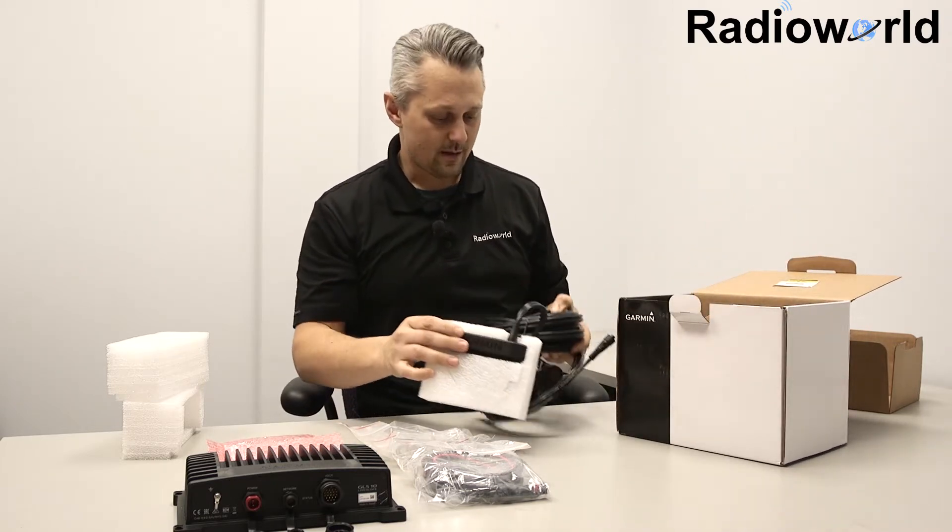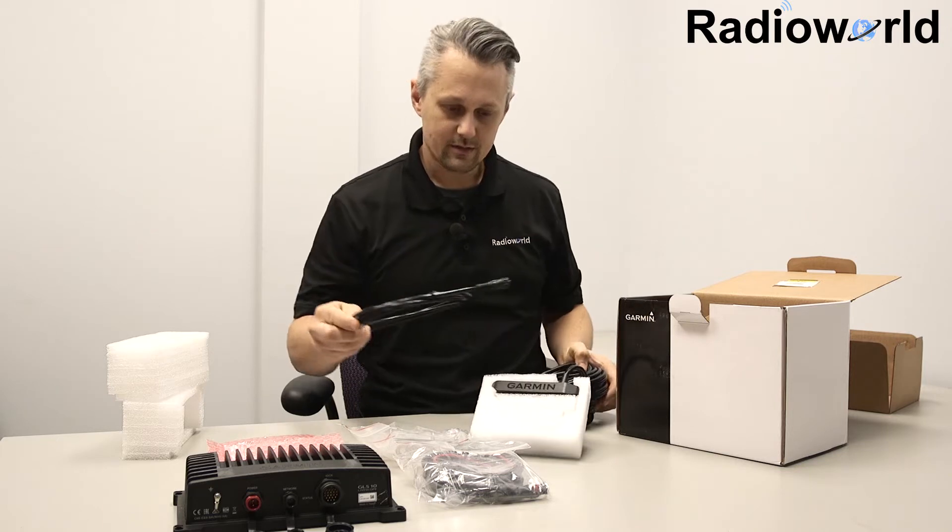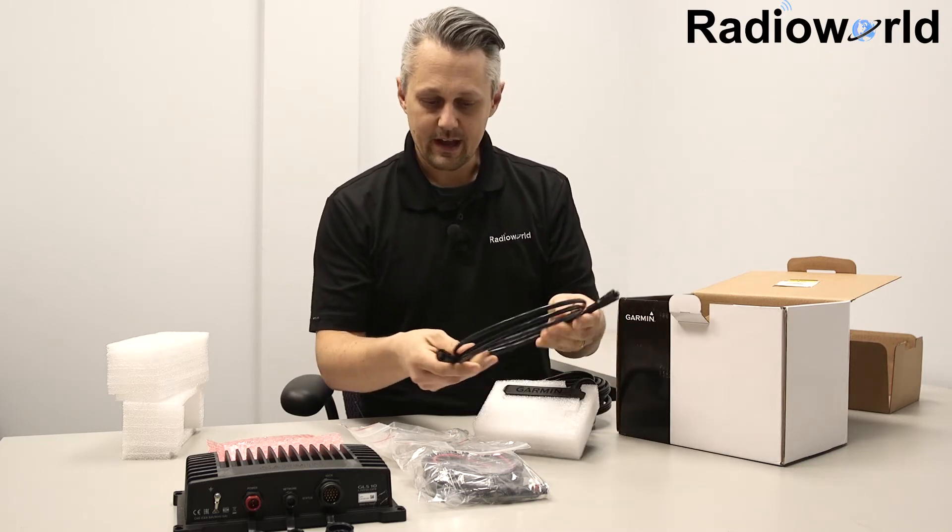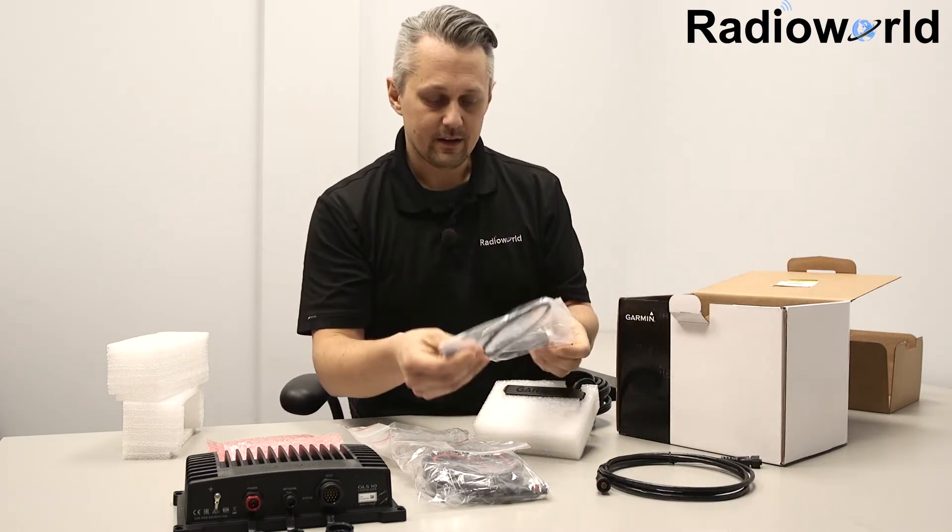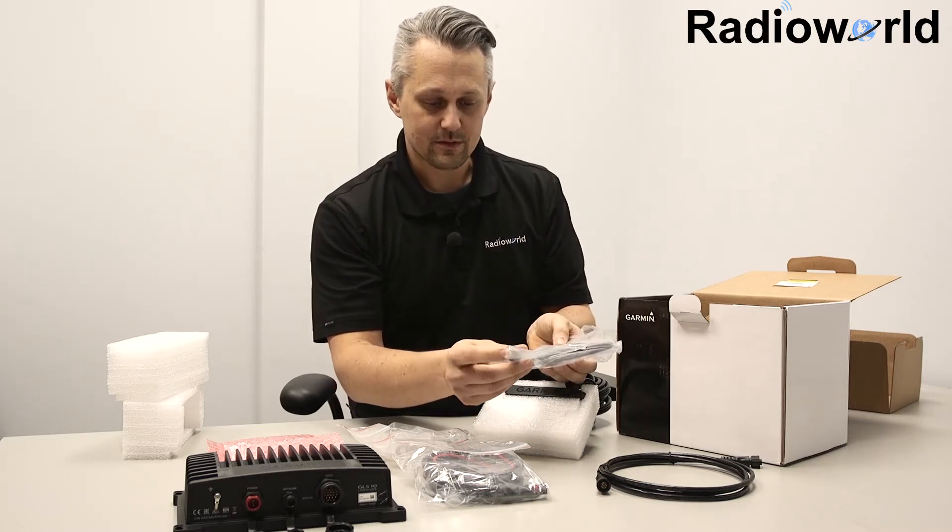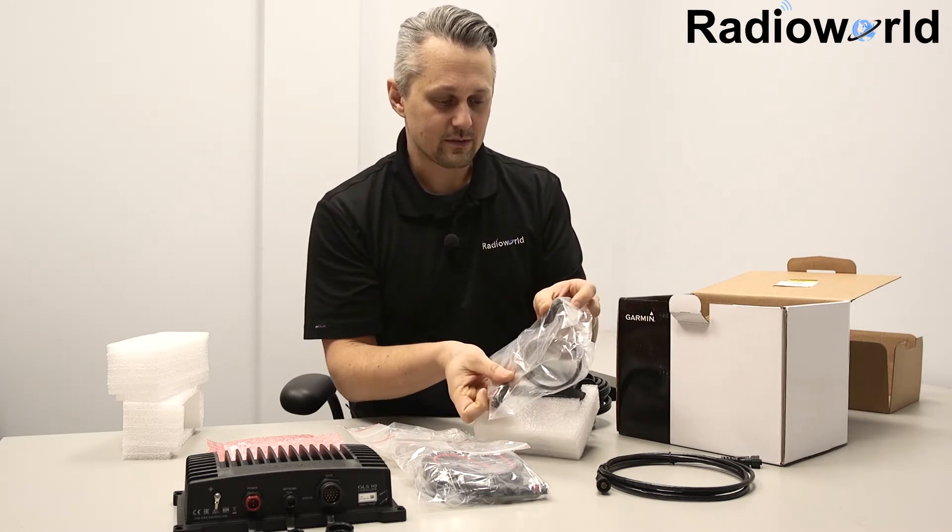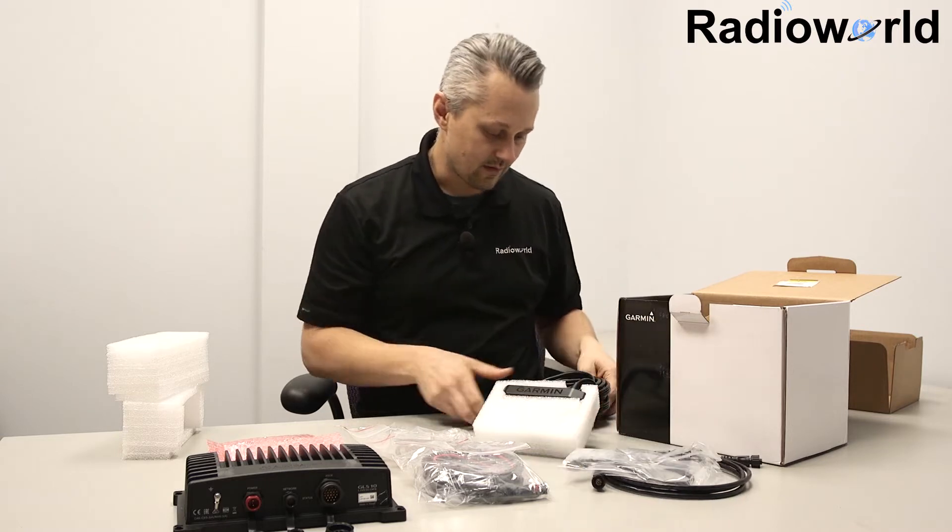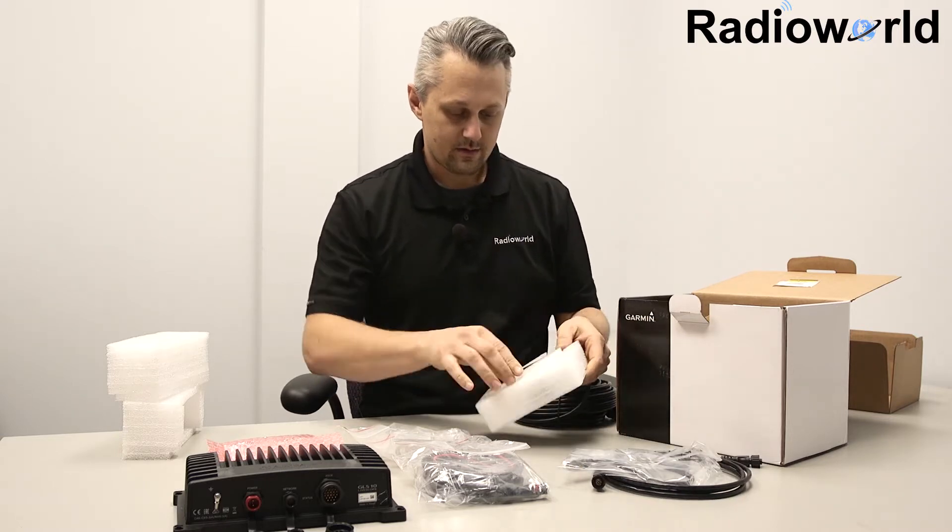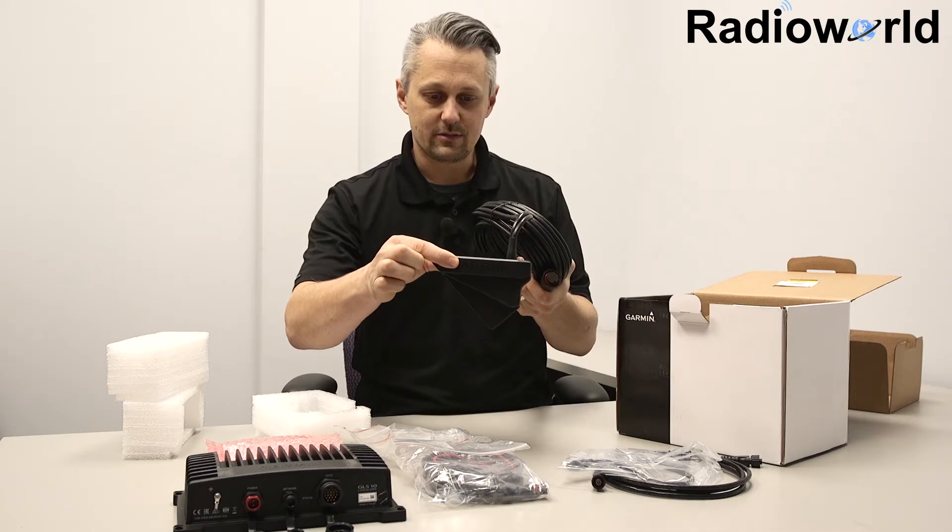Then we have the Panoptix LiveScope transducer. Looks like an Ethernet extension cable, and then here we have an Ethernet adapter cable, so the small Ethernet goes into the RJ45 connector on the back of the Garmin unit. And that's the Garmin LiveScope transducer.